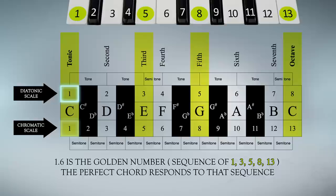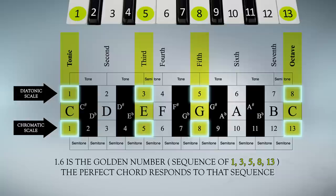1.6 is the golden number. Sequence of 1, 3, 5, 8, 13. The perfect chord responds to that sequence.